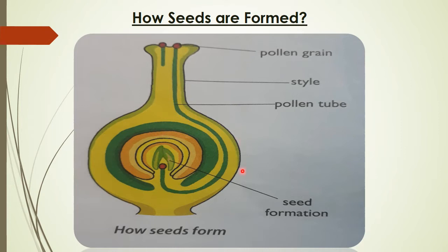The ovary changes — it swells up and turns into the fruit, and the newly formed seeds are inside the fruit. If the stigma of a flower does not receive pollen, the flower becomes useless as it cannot reproduce — it shrivels and dies.